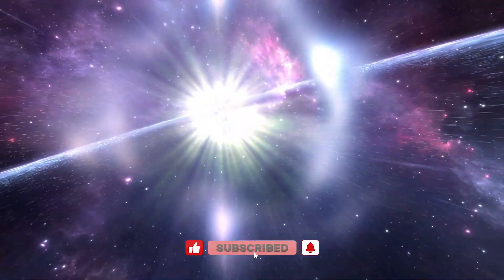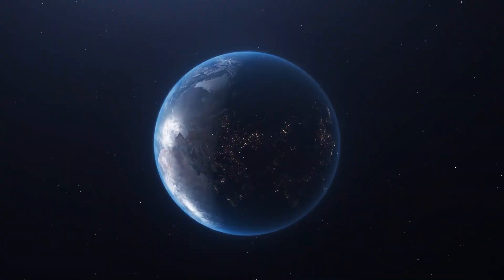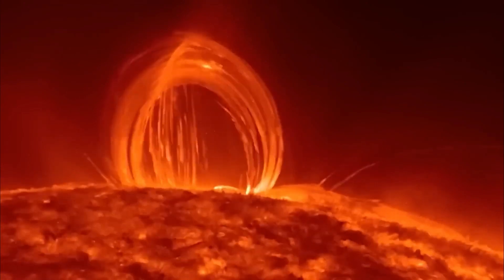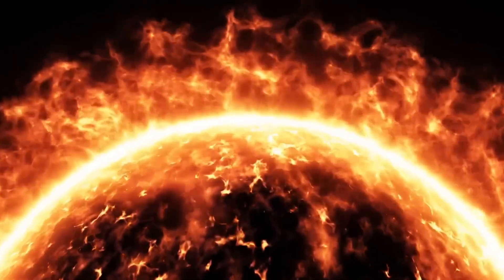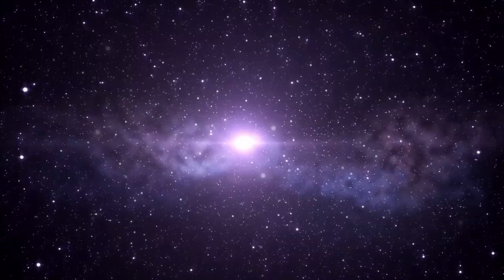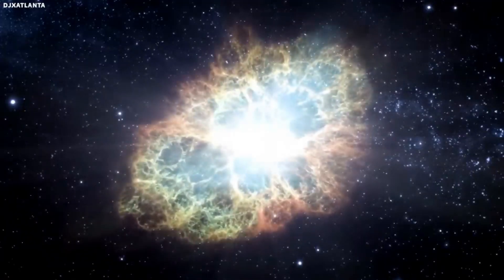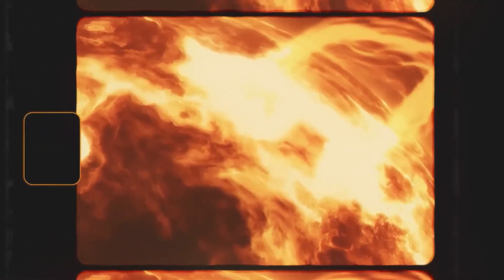Betelgeuse is a red supergiant star in the constellation of Orion. It's one of the most luminous stars known to us, shining with a brightness of over a hundred thousand times that of our own sun. Red supergiant stars, like Betelgeuse, are very unstable. They have a lot of mass and energy, but their cores are very dense. This means that they're constantly burning through their fuel at a very rapid rate.